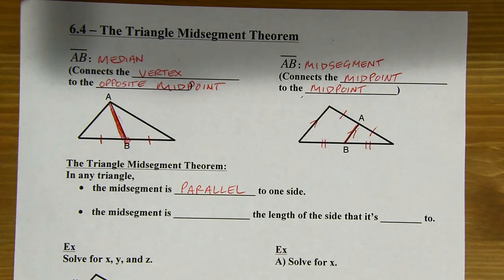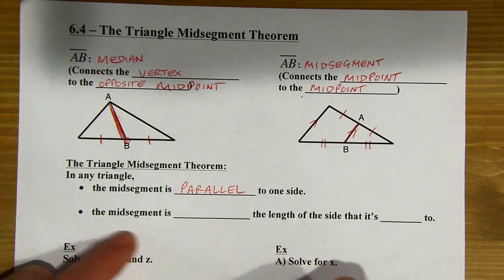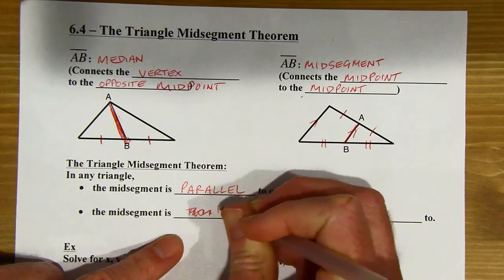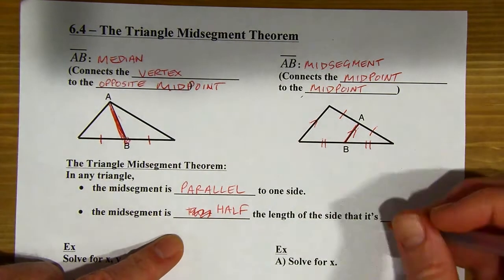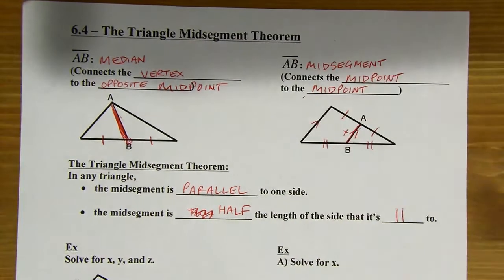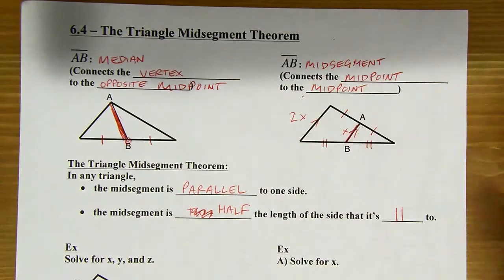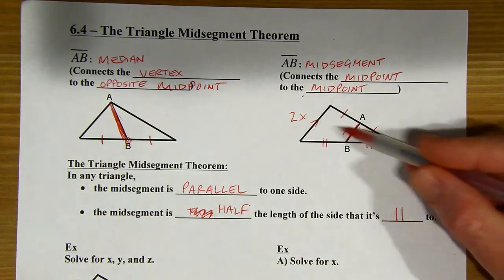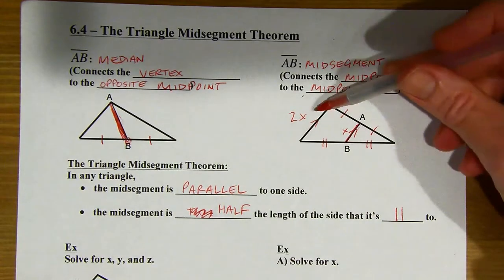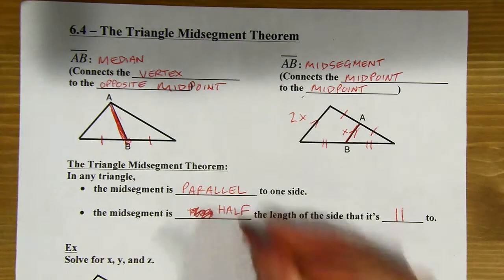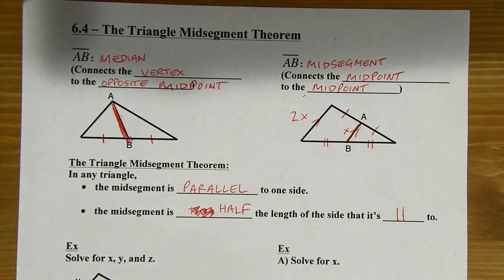The other thing you'd want to know is that the mid-segment is going to be half the length of the side that it's parallel to. So if this is X, then this segment is going to have a length of 2X. Those are the two important things: one, that you get the parallel sides, and two, that it's a 1 to 2 relationship with the mid-segment and the side that it's parallel to. All right, let's get to an example.